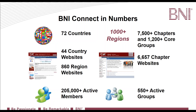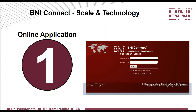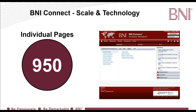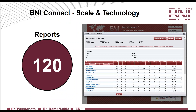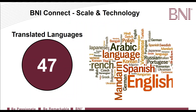We also have discussion groups — I'll talk about that more in the connecting with other members webinar in a couple of days. Just some scale of the technology: it is one online application with about 950 pages in BNI Connect. We've got about 120 reports. One of the things that makes it so complicated is that we have to translate every single thing in the system to 47 languages, and there are 14,753 fields in BNI Connect that have to be translated. There is just a ton of stuff. And every time we add a new function or feature, there's even more.